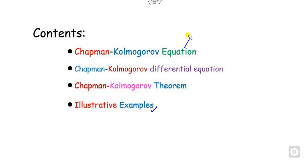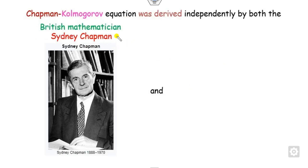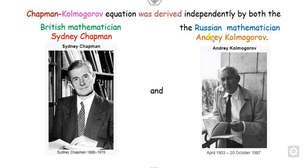The Chapman-Kolmogorov equation was first derived independently by two researchers: Sydney Chapman, a British mathematician, and Andrei Kolmogorov, a Russian mathematician. These two mathematicians defined this Chapman-Kolmogorov equation.